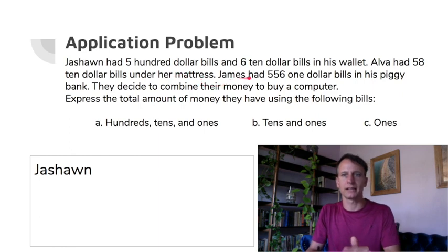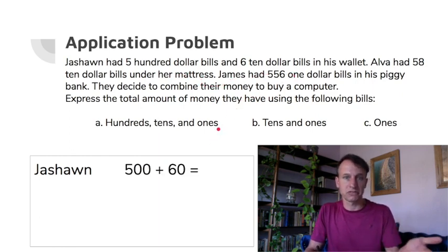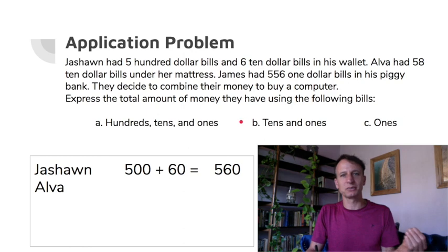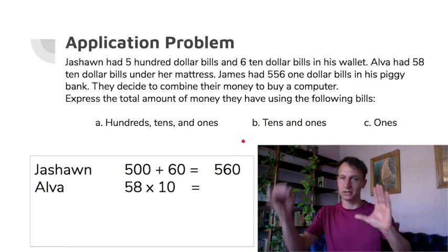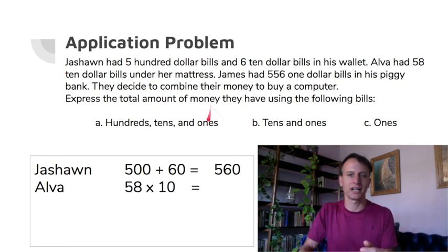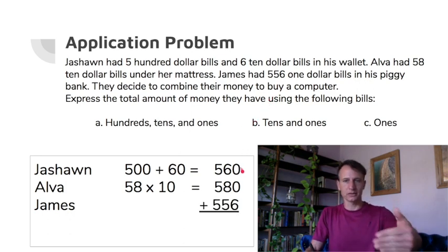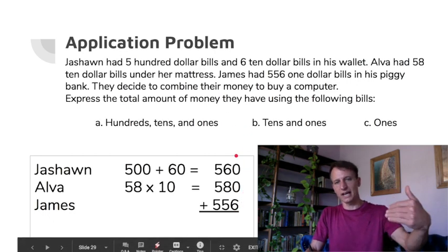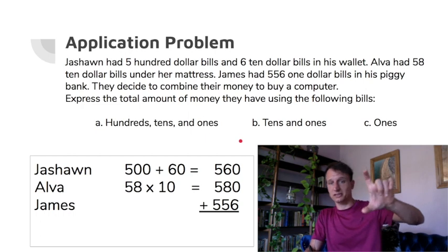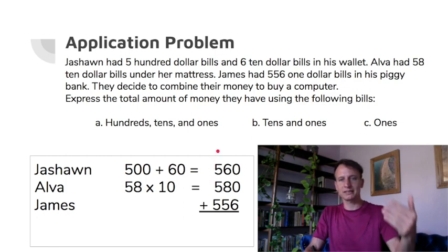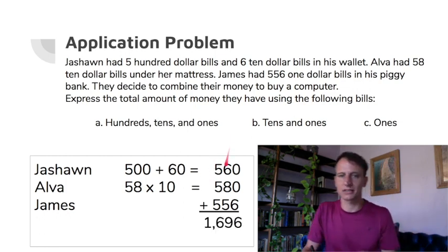Sean has five hundred-dollar bills and six ten-dollar bills — that's $560 altogether. Alva digs under her mattress and pulls out 58 ten-dollar bills — 58 times ten, slide right — that's $580. James has 556 one-dollar bills, which is just $556. When you add these up: zero plus zero plus six is six; six plus eight plus five — I like to do six plus five is eleven plus eight is nineteen, regroup — you end up with one thousand six hundred ninety-six dollars.